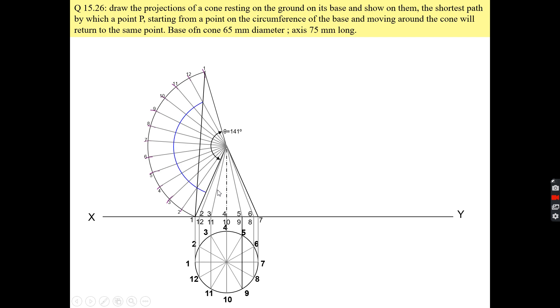I can transfer these points. This is your generator O12, and this distance I can measure and mark on the true shape of the generator. Then from that I can draw a horizontal line, or you can say a line parallel to the base, up to generator O12. Similarly, from generator O11 I can also mark the point in the front view in a similar way from the other generators.